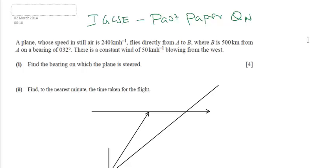A plane whose speed in still air is 240 km per hour flies directly from A to B, where B is 500 km from A on a bearing of 32 degrees true bearing. There is a constant wind of 50 km per hour blowing from the west.